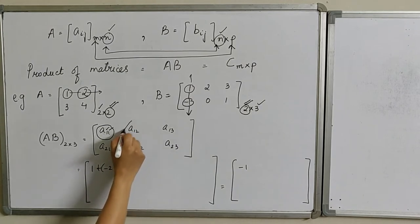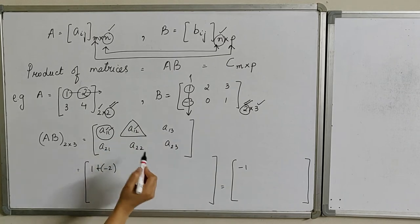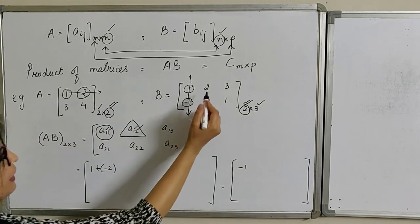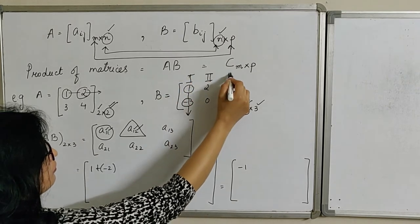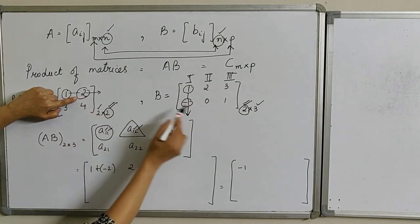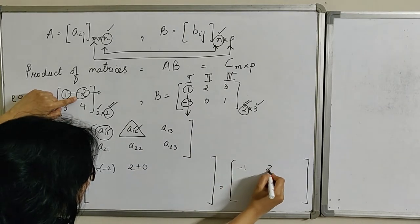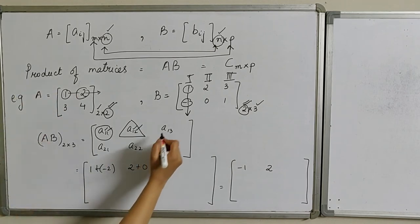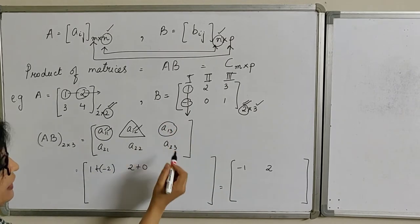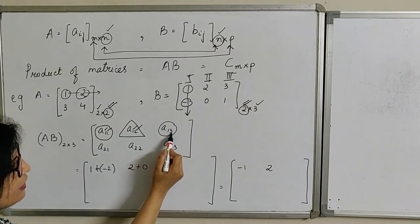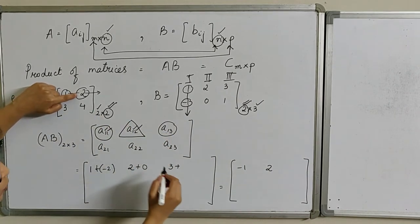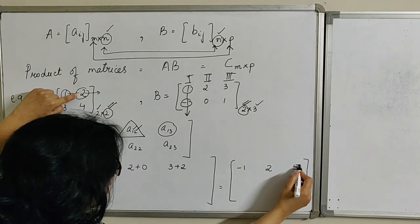Next, element A₁₂ means multiply the first row of matrix A with the corresponding elements of the second column of matrix B. Multiplying corresponding elements: 1×2 plus 2×0, the result is 2. Element A₁₃ means the first row of matrix A multiplied by the third column of matrix B: 1×3 plus 2×1, the result is 5. This completes the first row elements of the product matrix.